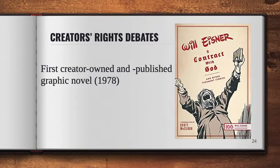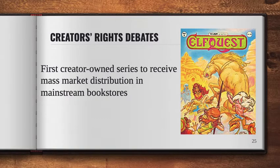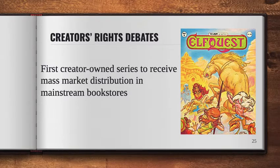Then Will Eisner's A Contract with God became the first creator-owned and published graphic novel. And finally, also in 1978, ElfQuest became the first creator-owned series to receive mass market distribution in mainstream bookstores — not in a comic shop. That was really a watershed year, and it speaks to a major component of the history of comics and graphic novels that differs from other types of literature. Though in actuality all literature is affected by consumerism, the market, and the publishing industry, that reality has been significantly more public for the comics industry. It's contributed to a perception of comics as a product rather than literature, keeping Graphica out of the serious literature camp for many years.